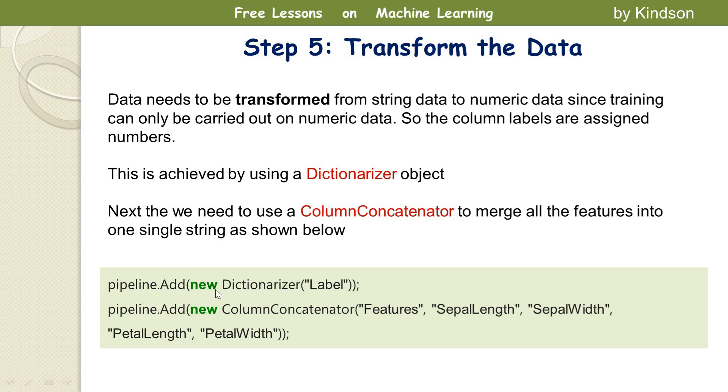So this is pipeline. You add dictionaryizer. You are taking the label which is a string and you are changing it to numeric values. Then all the features are concatenated into one big string and that is what is handled by column concatenator, combining all the features attributes into one string. So this is called data transformation, you transform your data.